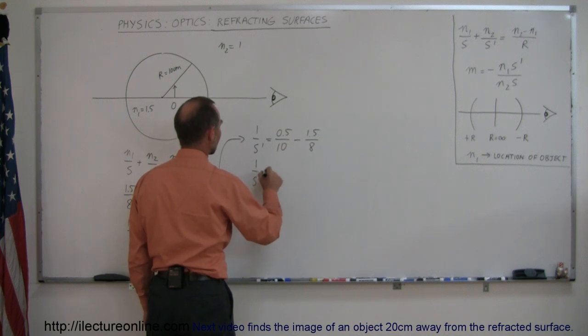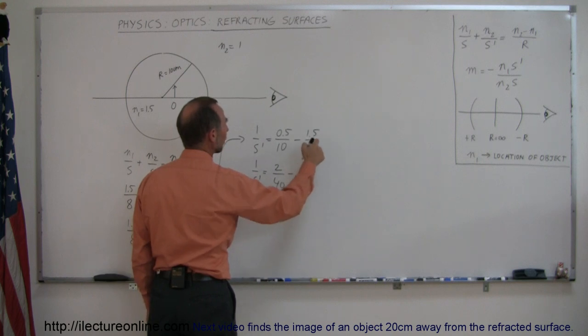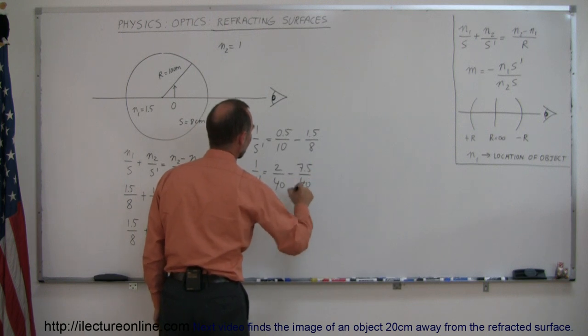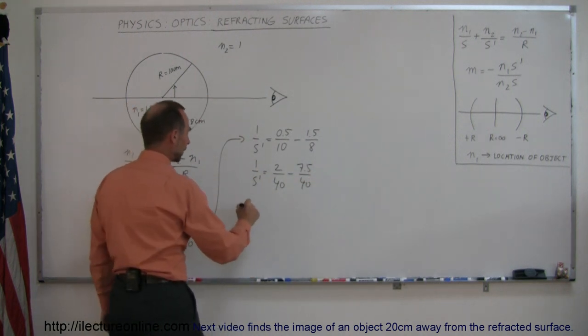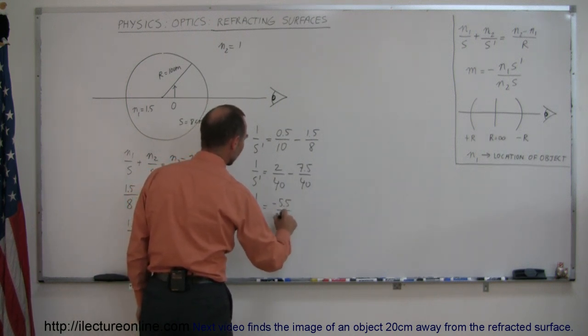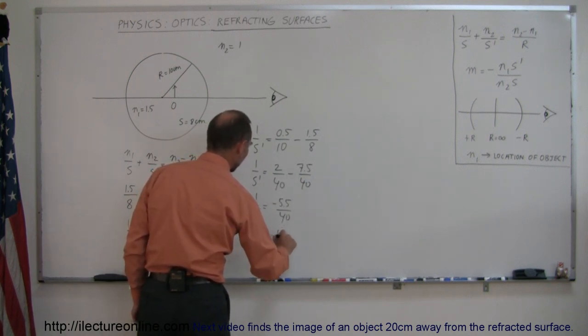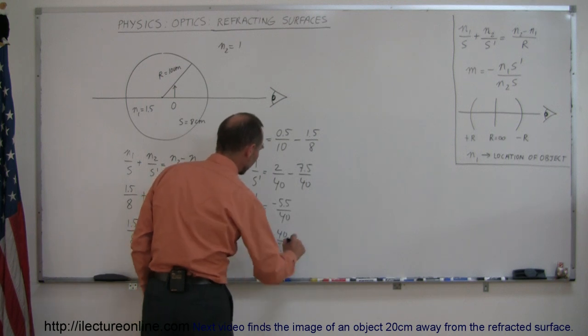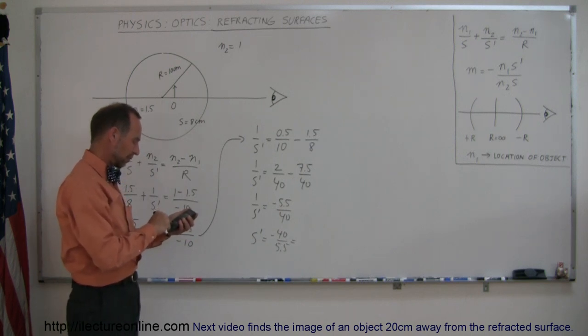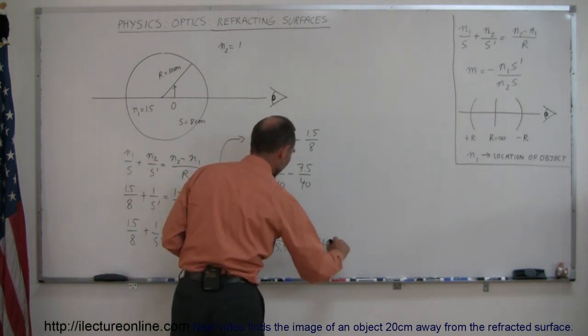So we have 1 over s prime is equal to multiply both top and bottom by 4, that would be 2 over 40, minus multiply top and bottom by 5, we get 7.5 over 40. Combining that, we have 1 over s prime is equal to 2 minus 7.5, that's minus 5.5 over 40, and then taking the inverse, we get s prime is equal to minus 40 over 5.5. If we grab our calculator, 40 divided by 5.5 equals minus 7.3, and that's of course centimeters.